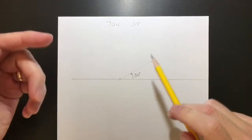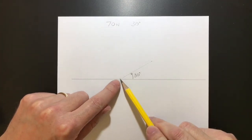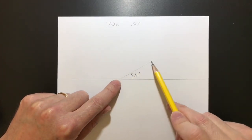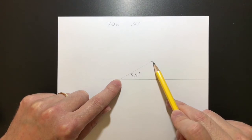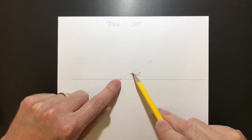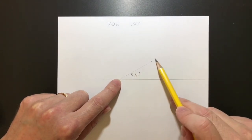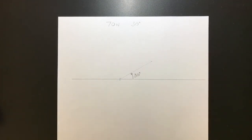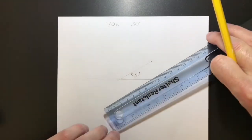Now that is just a line. It's not 70 newtons yet. We need to accurately portray that as 70 newtons. To do that, we need to change its length.